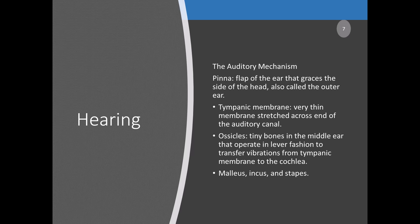The ossicles are tiny bones in the middle ear that operate in a lever fashion to transfer vibrations from the tympanic membrane to the cochlea. The malleus, incus, and stapes are named for their shapes — in English, the hammer, anvil, and stirrup. By concentrating energy from the larger tympanic membrane onto the much smaller base of the stirrup, the ossicles amplify sound approximately 30-fold, compensating for energy loss as vibrations pass from air to the denser liquid inside the cochlea.